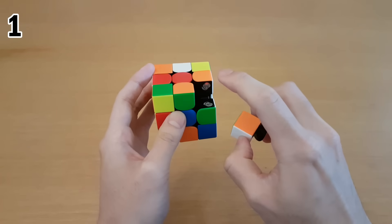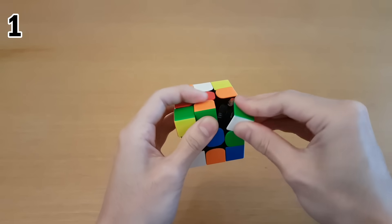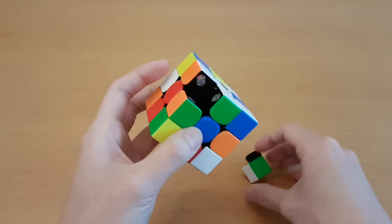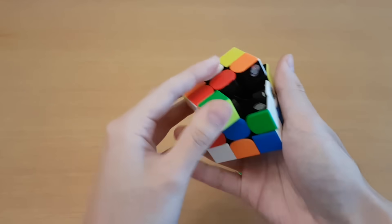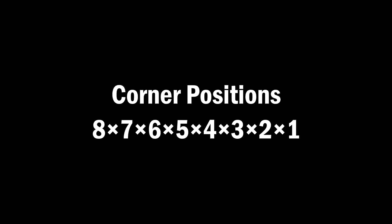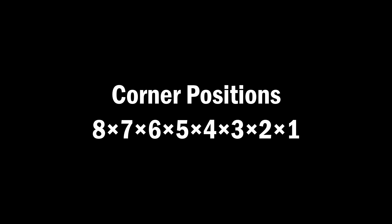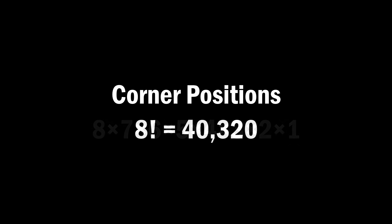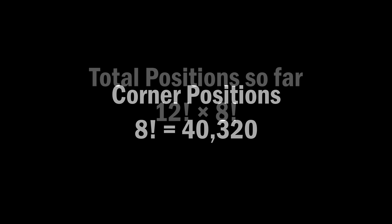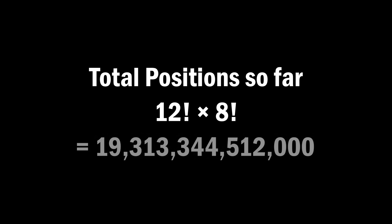And again, for the last corner piece, I only have one spot it can go into. Okay, I didn't think this through. You're not supposed to put a cube back together like this. For the corner pieces, we have 8 times 7 times 6, all the way down to 1, and this is 8 factorial. When you multiply all this together, you get over 19 trillion different ways that you can put the pieces in the cube.